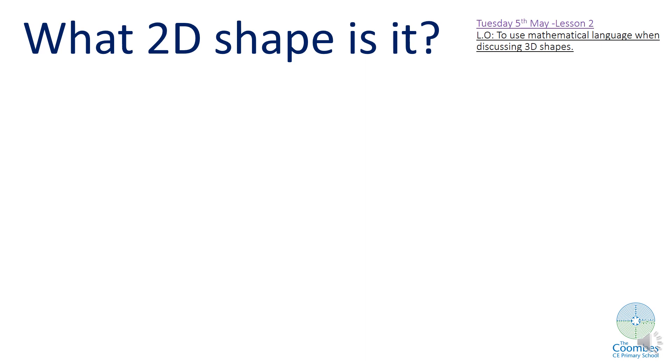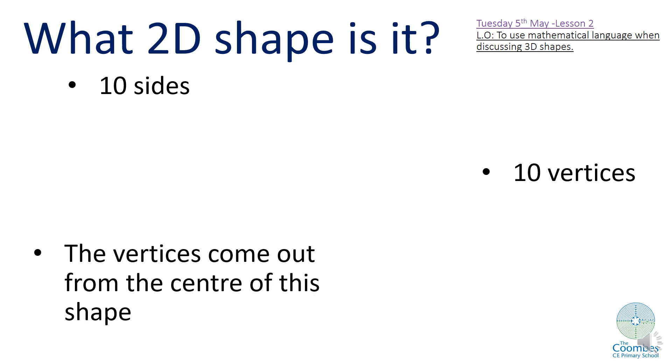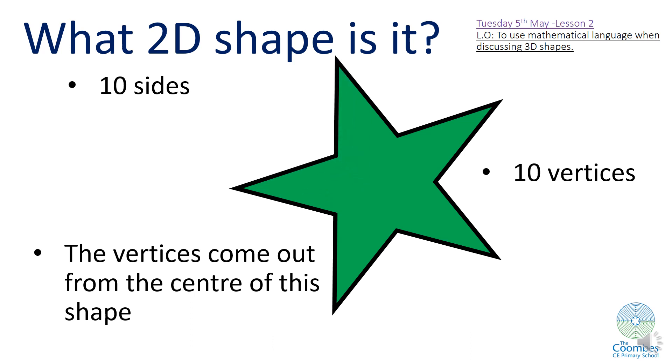I wonder what shape this shape will be. This shape has got 10 sides, 10 vertices. There's lots of vertices on the sides, isn't it? And the vertices all come out from the centre of this shape. So it's got 10 sides, 10 vertices, and all the vertices come out from the centre of this shape. Brilliant, well done. This shape is a star.